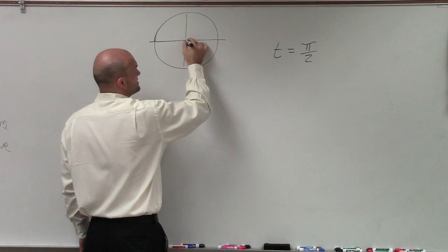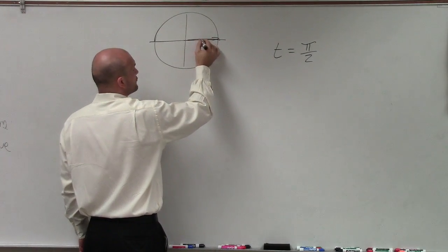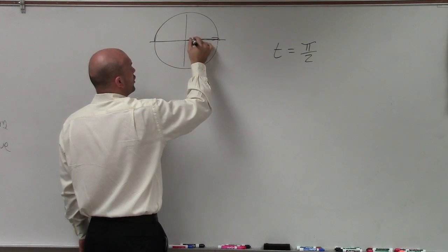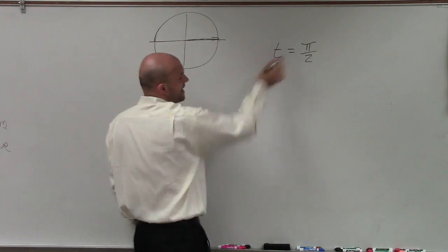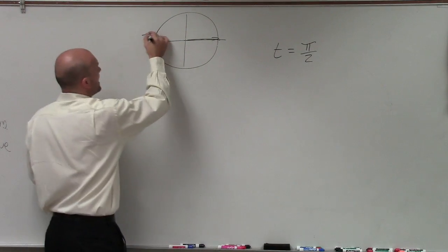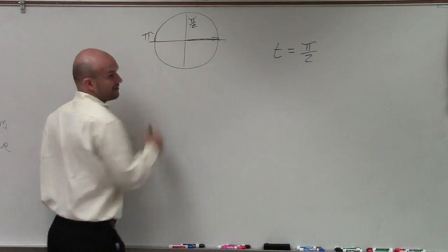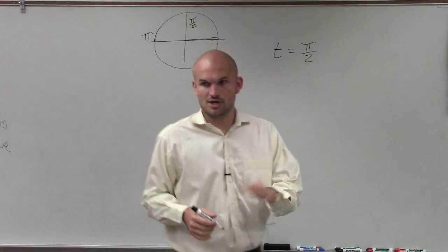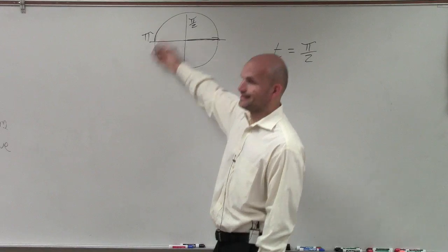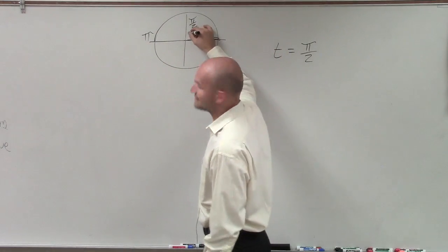If we're looking at the unit circle, and I start at my initial side and I rotate to my terminal side, hopefully you guys know that pi halves is the exact—well, if this is pi, then this is one half of pi, right? So if that's 180, and to go there, that's like half of it, which would be like 90 degrees.